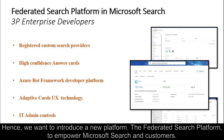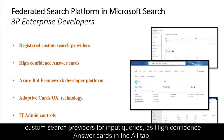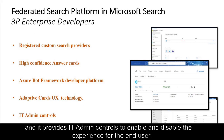Hence, we want to introduce a new platform — the Federated Search Platform — to empower Microsoft Search and customers. It provides the ability to bring back results from external sources by calling registered custom search providers for input queries as high-confidence answer cards in the alt tab. It also provides a Bot Framework-based developer platform with a standard protocol and adaptive card UX technology, and IT admin controls to enable and disable the experience for the end user.